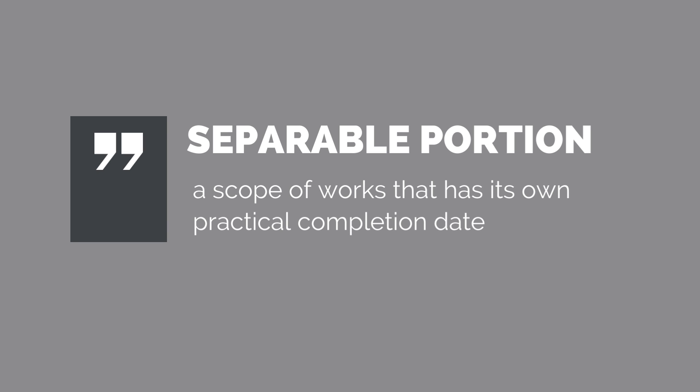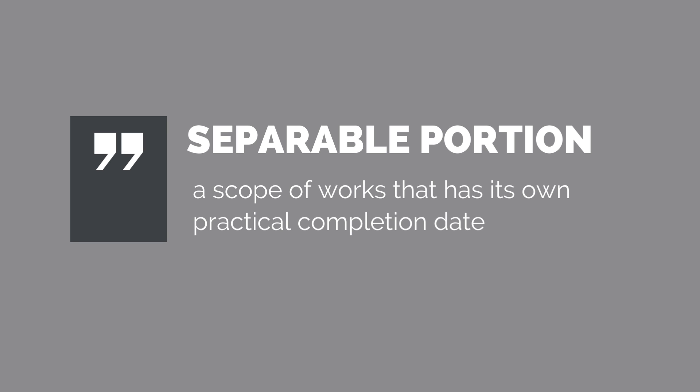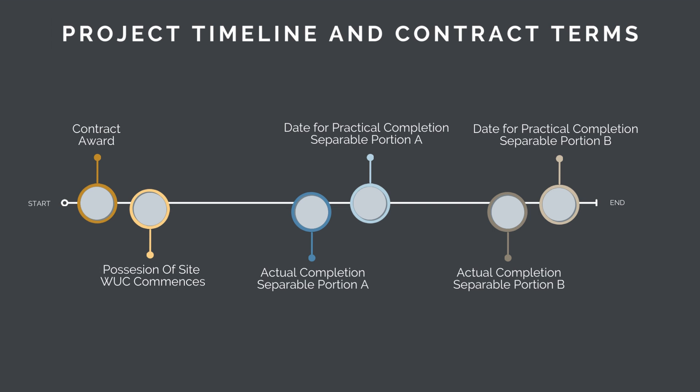Say you're working on a project to build a new railway station — it might be a separable portion within the contract to open up some of the platforms early. Check out the first diagram. This shows contract award at day zero, possession of the site and the work under the contract commencing, followed by two separable portions. Both separable portions have unique completion dates. Note that the actual separable portion completion date is before the date of practical completion for each separable portion.